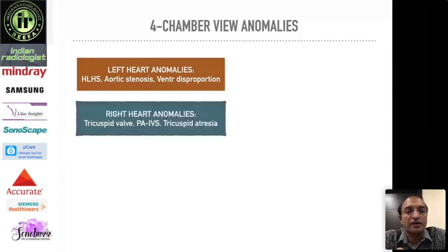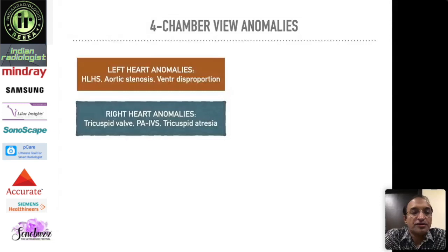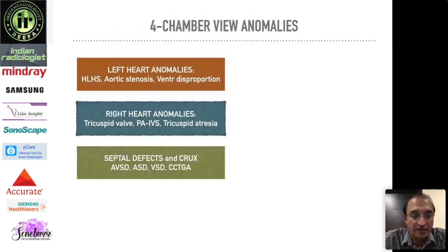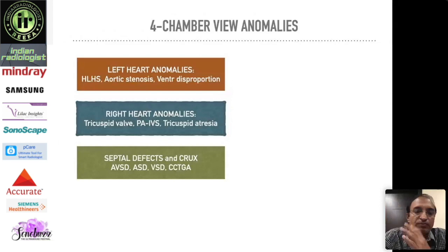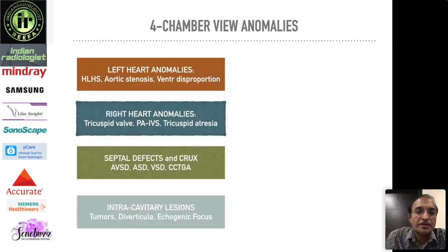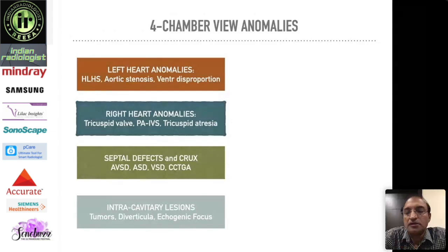On the right side, there are abnormalities of the tricuspid valve typically causing tricuspid regurgitation, then pulmonary atresia with intact ventricular septum — sometimes called hypoplastic right heart syndrome — and then tricuspid atresia. The third group is septal defects and abnormalities of the crux of the heart, the most common and significant being atrioventricular septal defect. ASD and VSD are less critical in fetal life as they are totally correctable. Congenitally corrected transposition (CCTGA) has a distinctive four-chamber variation. Intracavitary lesions include cardiac tumors, typically multiple rhabdomyomas.